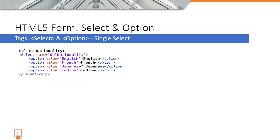The heading is 'Select Nationality' and the options are English, French, Japanese, and Indian. The user can select only one nationality from this combo box.